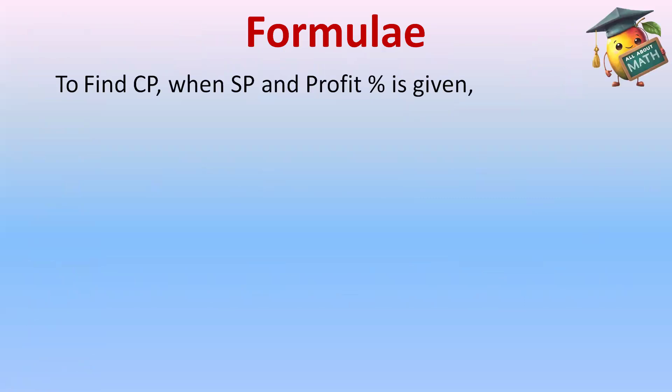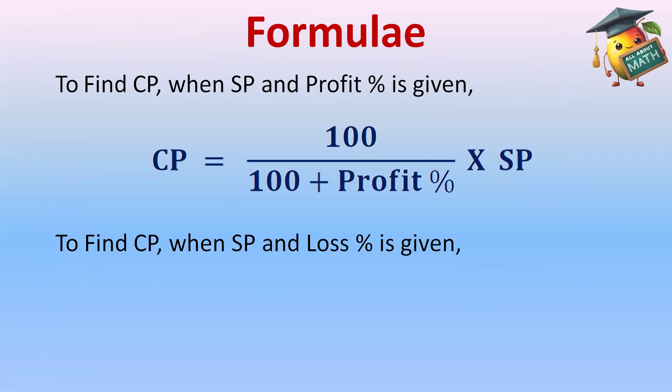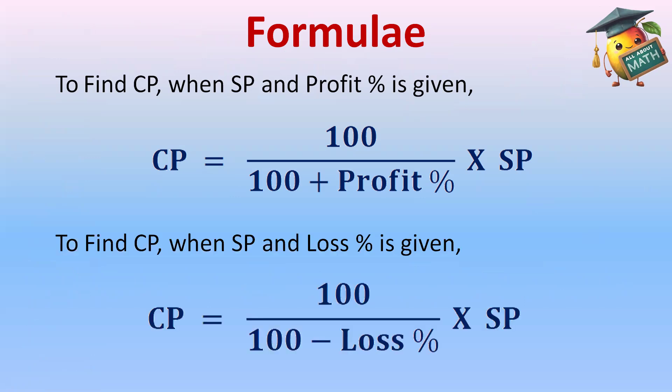The formula to find cost price when selling price and profit percent is given: Cost Price = (100 / (100 + Profit%)) × Selling Price. When loss percent is given, the formula is: Cost Price = (100 / (100 - Loss%)) × Selling Price. Now, the trick to remember the formula — C for cost price means the formula is a little complex.